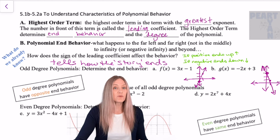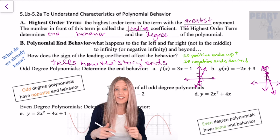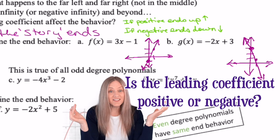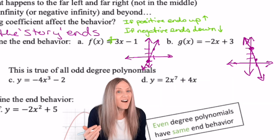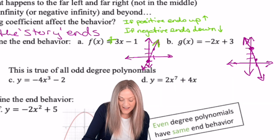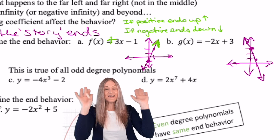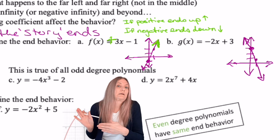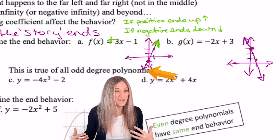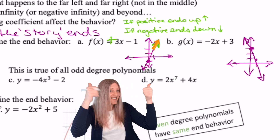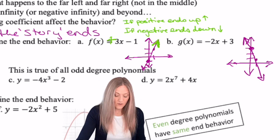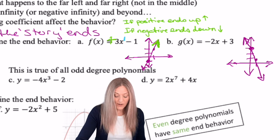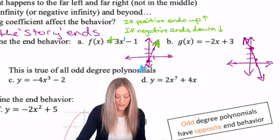Let's apply this to lines. What is the end behavior of the line in example A? Is the leading coefficient positive or negative? It's positive. Therefore, this story ends up — it ends positive. How did it begin though? What was the end behavior when x's were really, really small? It started the opposite. So it's like the story started sad but ends happy. This is degree one — one is an odd number. Whenever the degree is odd, it's going to do the opposite for end behavior.